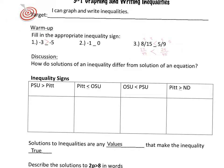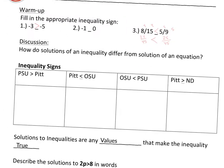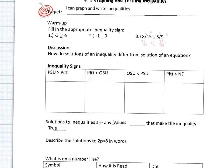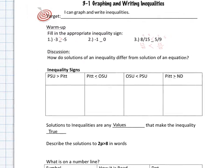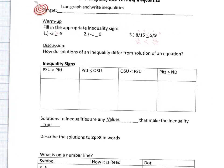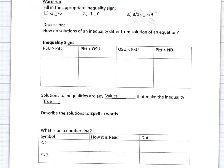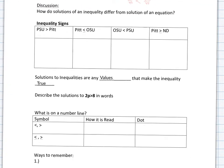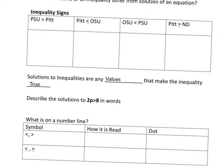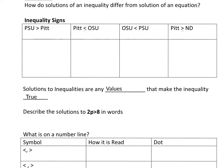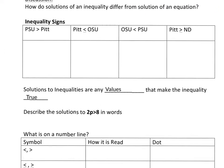How do solutions for an inequality differ from solutions for an equation? Solutions for an equation were the value that made the equation true.